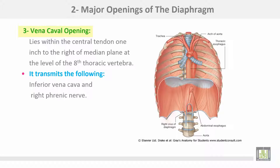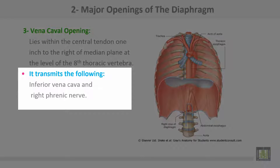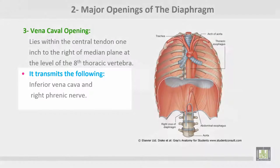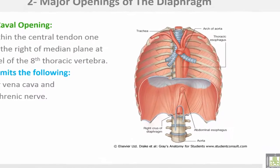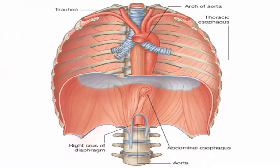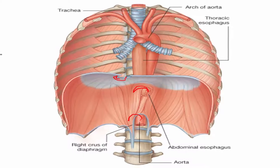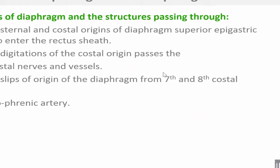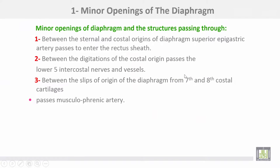Number three: the vena cava opening lies within the central tendon, one inch to the right of the median plane at the level of the 8th thoracic vertebra. It transmits the inferior vena cava and the right phrenic nerve. These are the three major openings of the diaphragm: the esophageal opening, the aortic opening, and the vena cava opening in the central tendon.